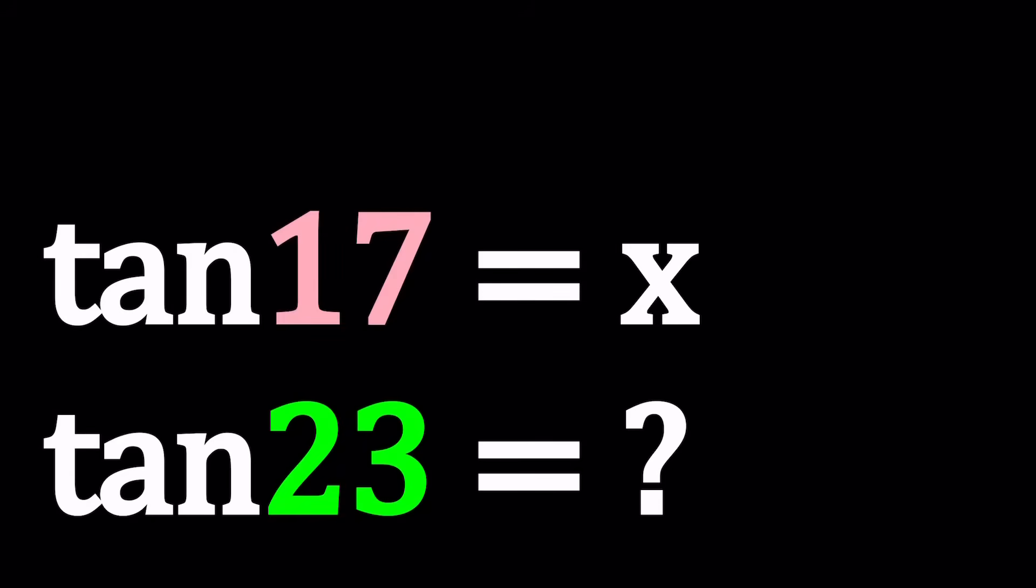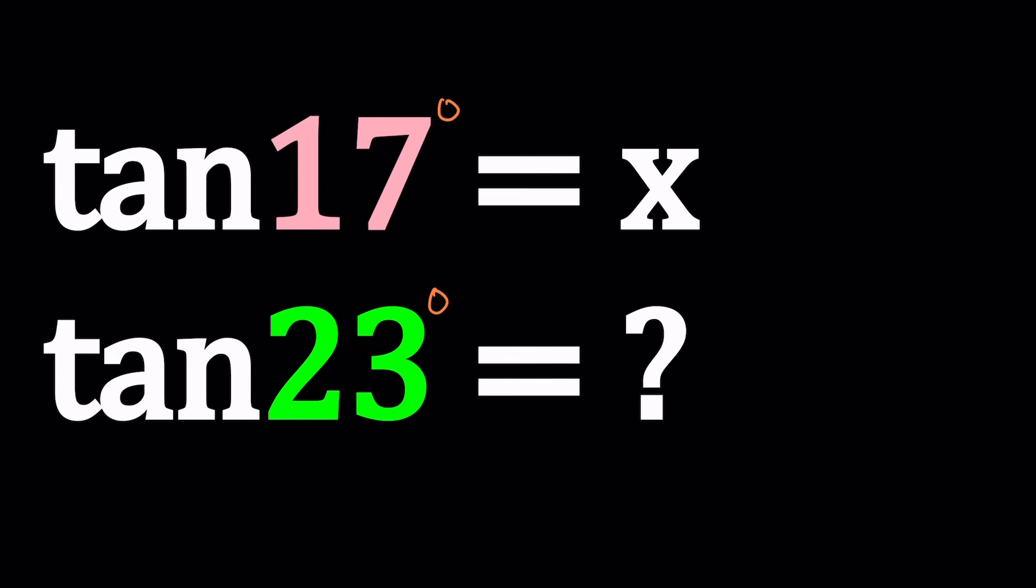Hello everyone. In this video we're going to be solving a trigonometry problem. We're given that tangent 17 degrees is equal to x. By the way, I forgot to write the degree symbol. Sorry about that. But I usually don't write it. It's usually understood, hopefully.